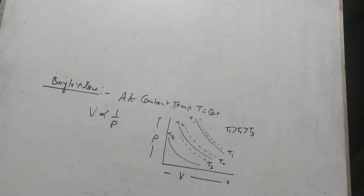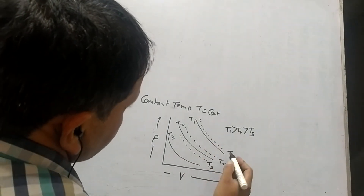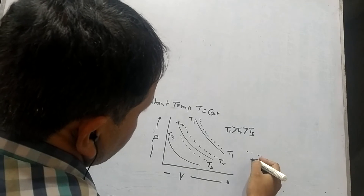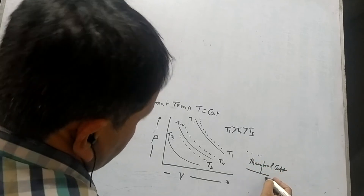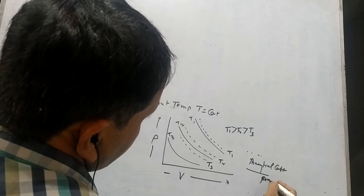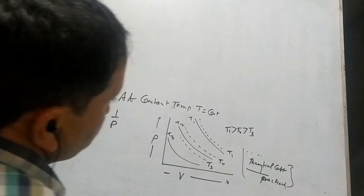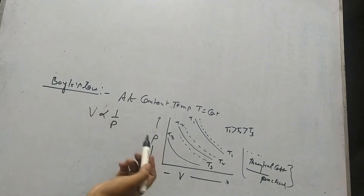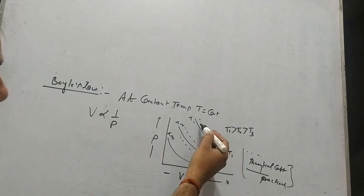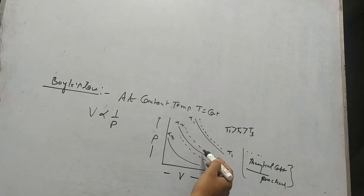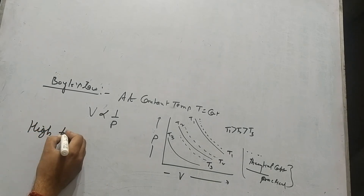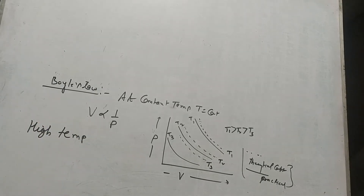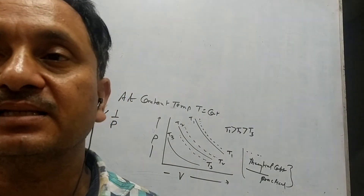As we increase the temperature, the dotted theoretical curve and the dark experimental curve come closer together. At high temperatures the two curves nearly match, meaning Boyle's law is applicable at high temperatures for all gases. At low temperatures, Boyle's law does not work — the theoretical and experimental values diverge significantly.